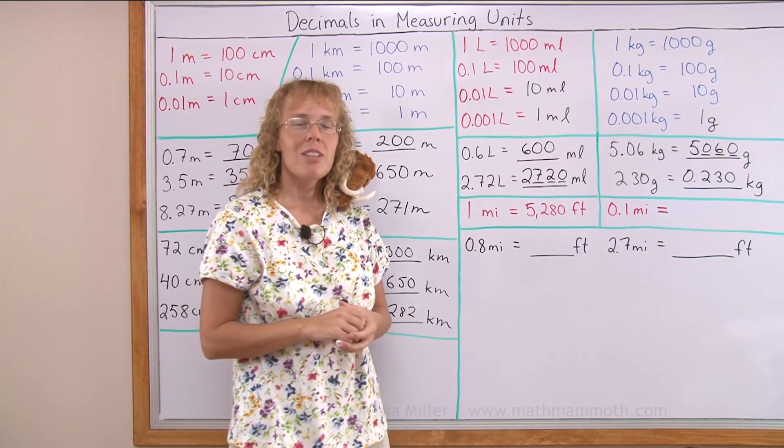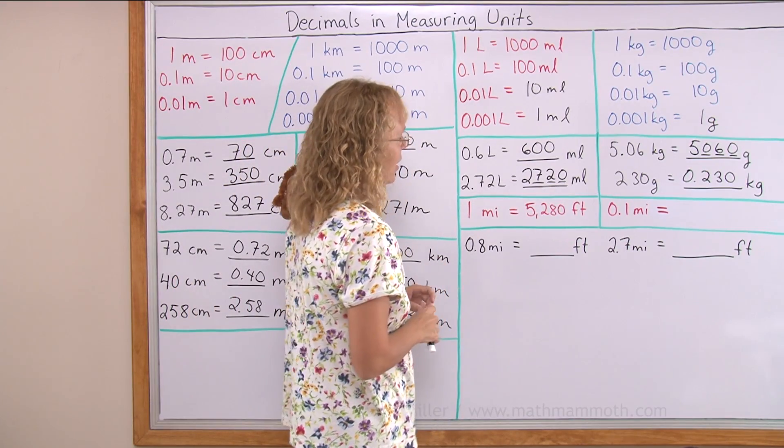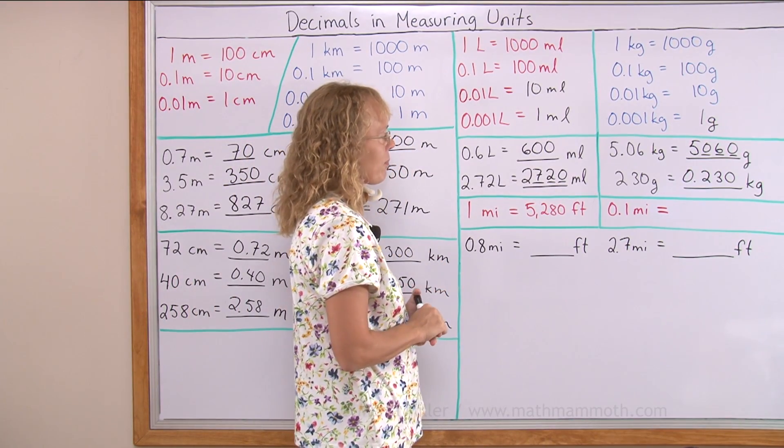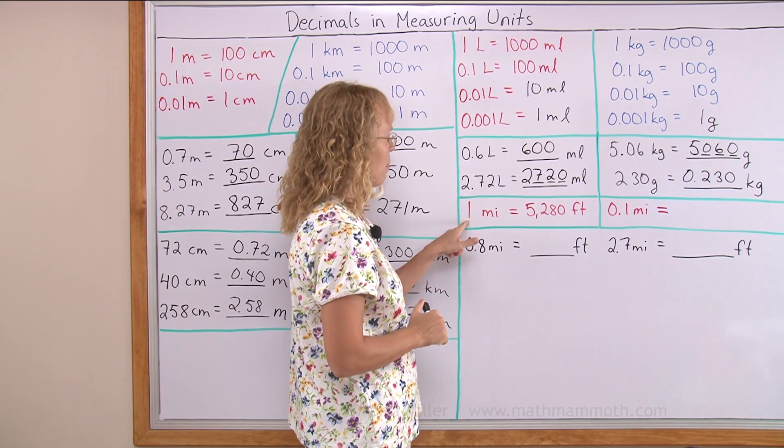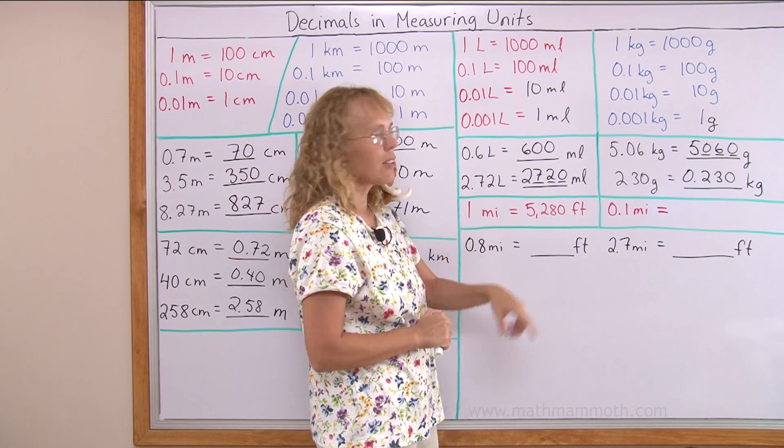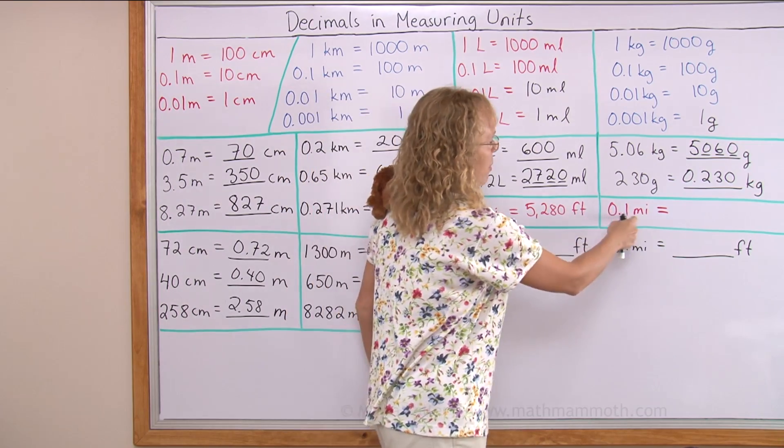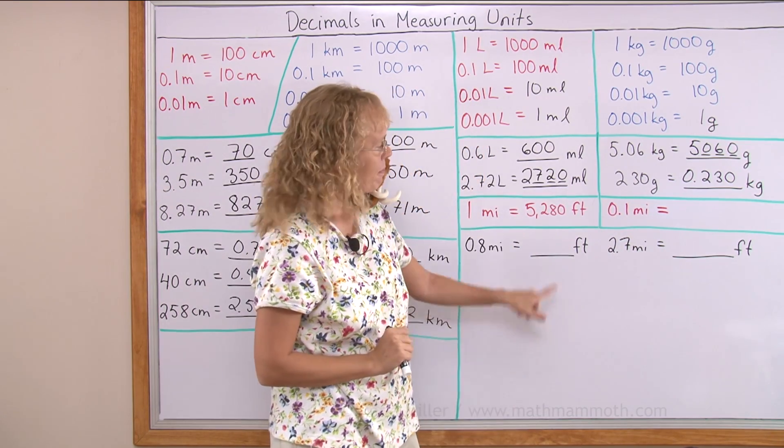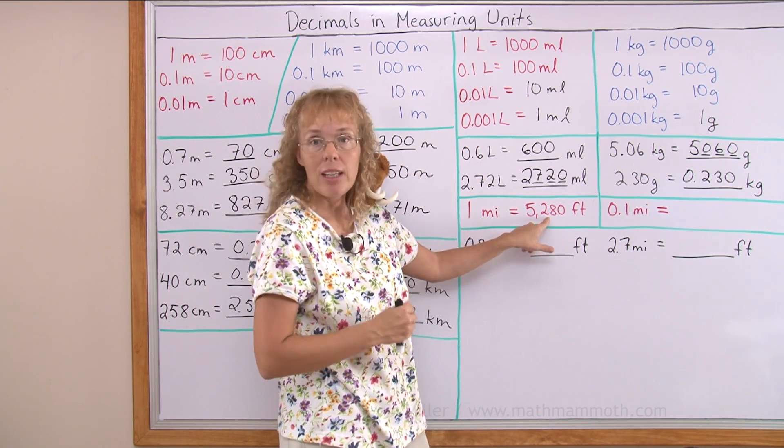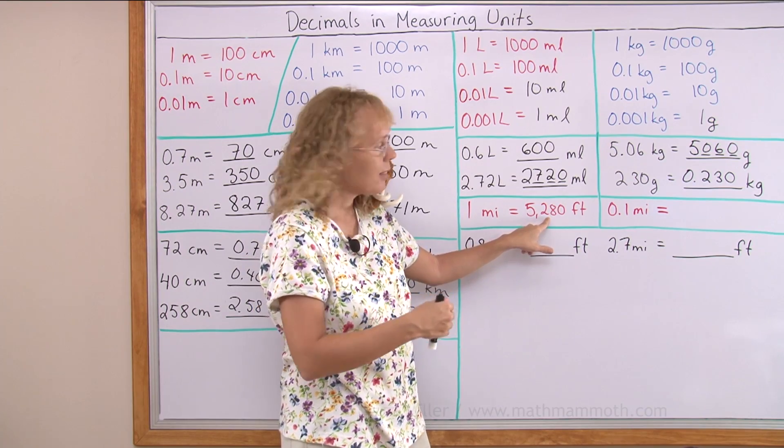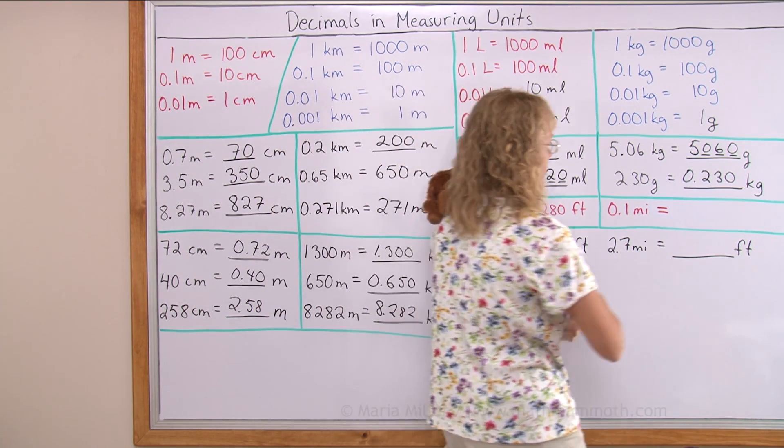Lastly, we'll look a little bit at miles and decimals, miles and feet. One mile is known to be 5,280 feet. What about tenth part of a mile? Look at this number. Divide it into ten parts. Divide it by ten, we get 528 feet.